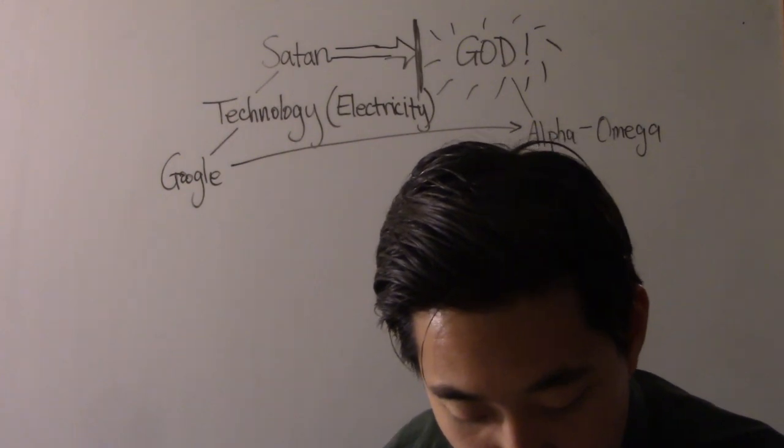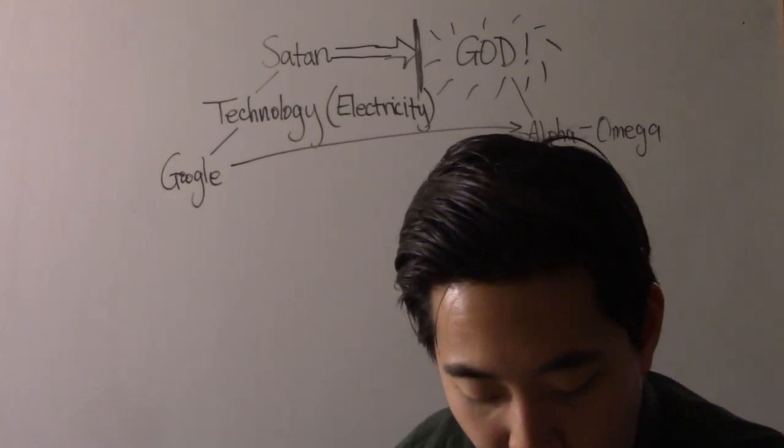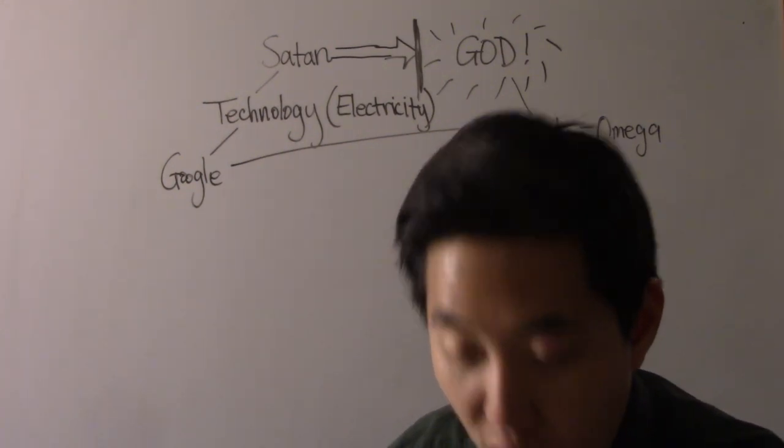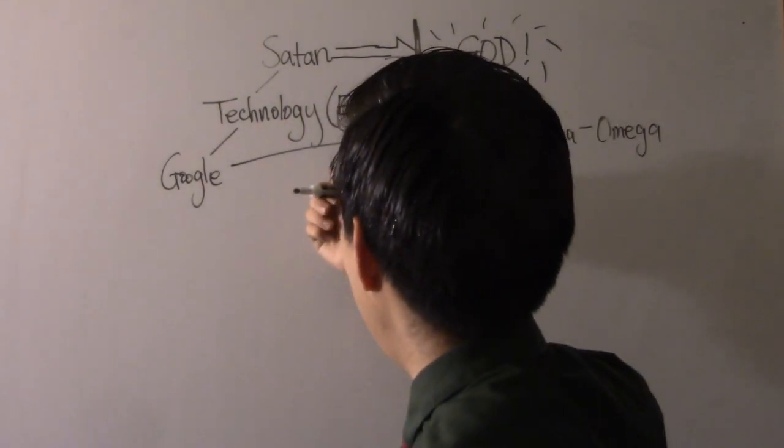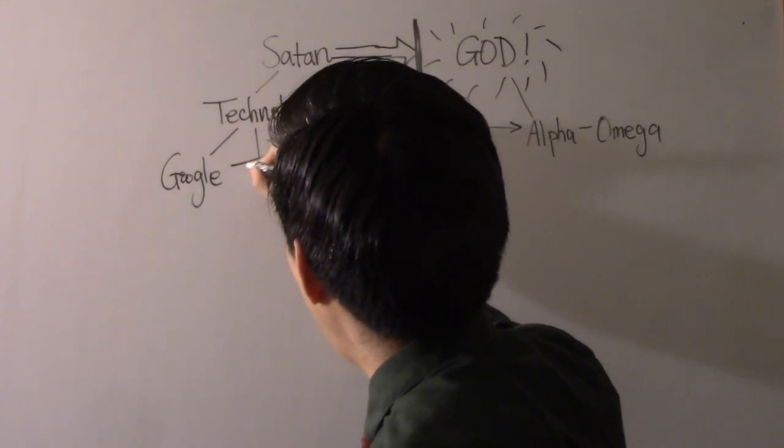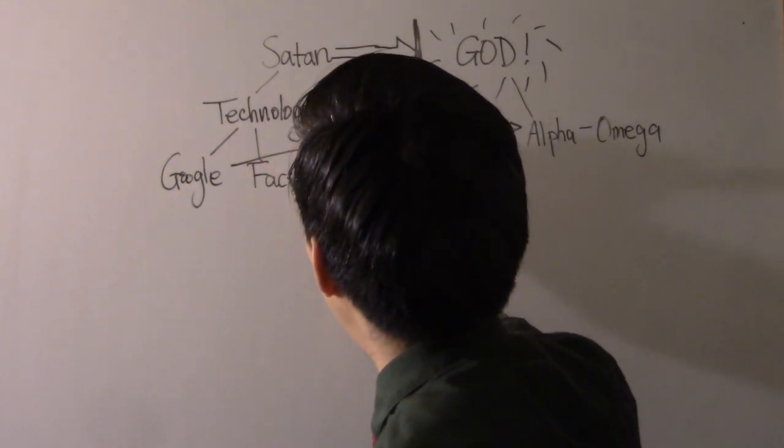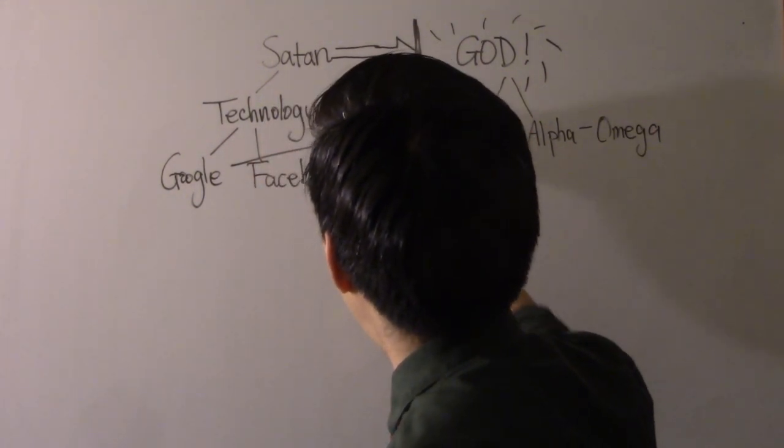And he literally means that from A to Z. Because look at verse 11. Saying, I am Alpha and Omega, the first and the last. But what covers from A to Z is Google.